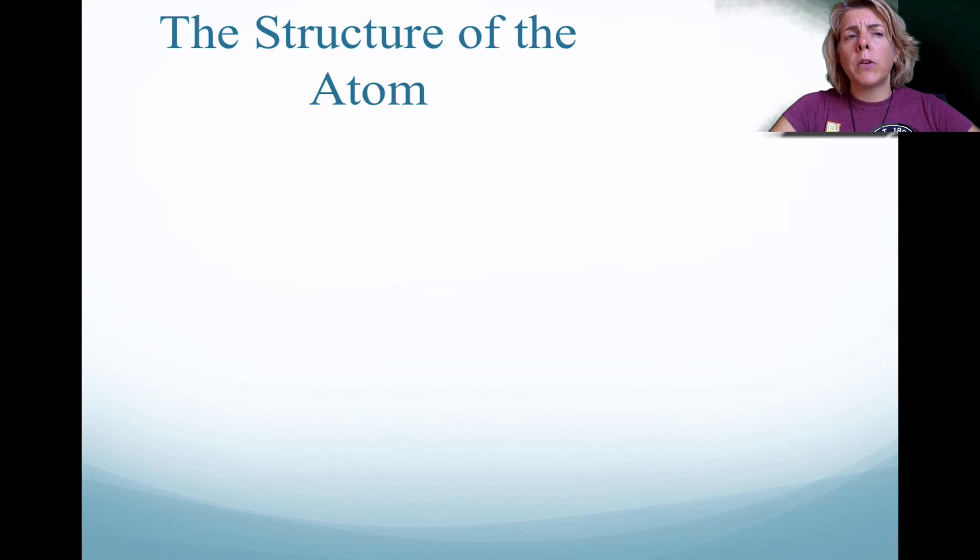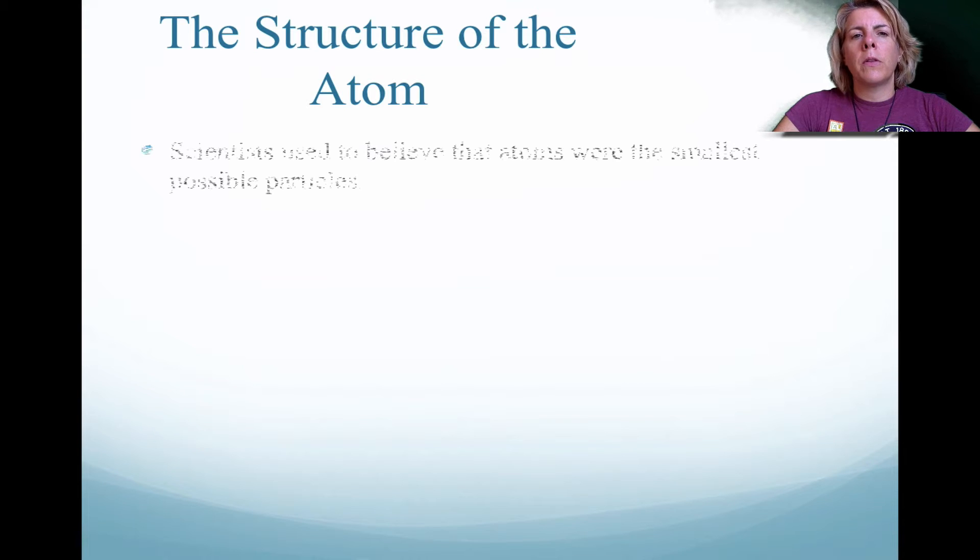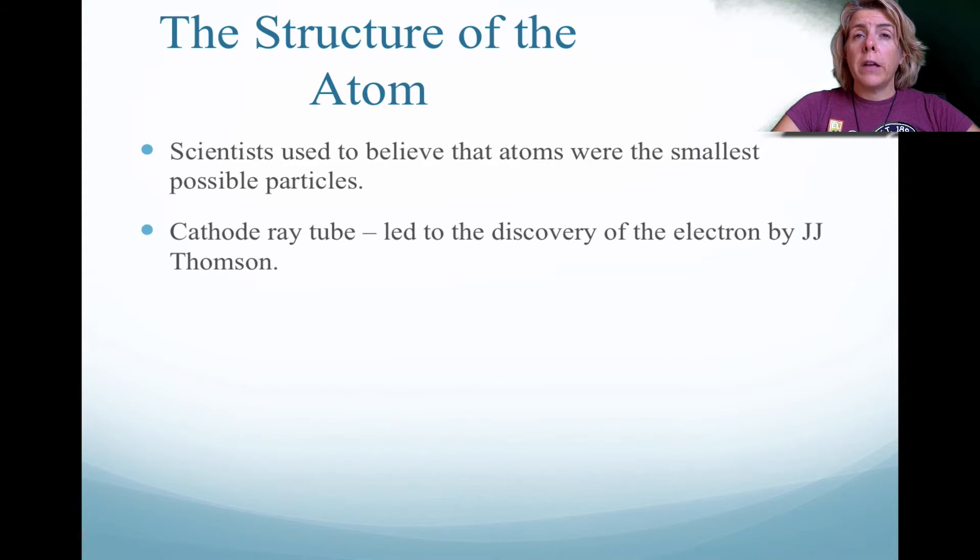From the last video, you saw that Democritus and Dalton were the ones that were able to find or to reason out the fact that the atom was considered the smallest possible particle. Now with the advent of cathode rays, they were able to generate this beam of matter and they were trying to figure out what is in this beam of matter.